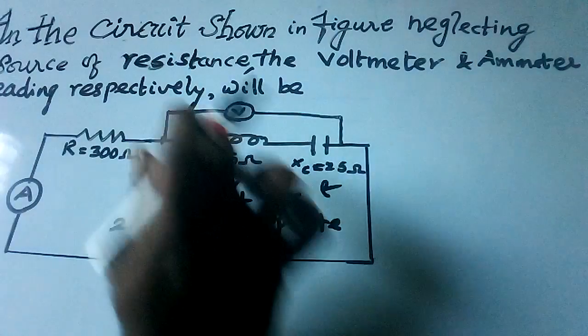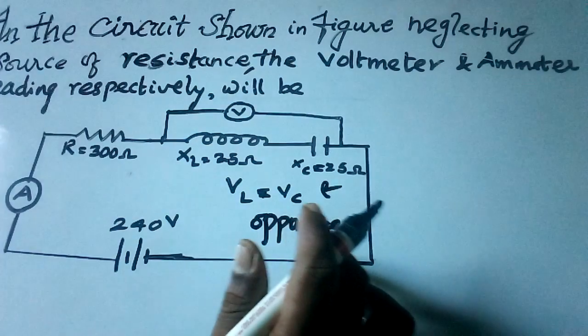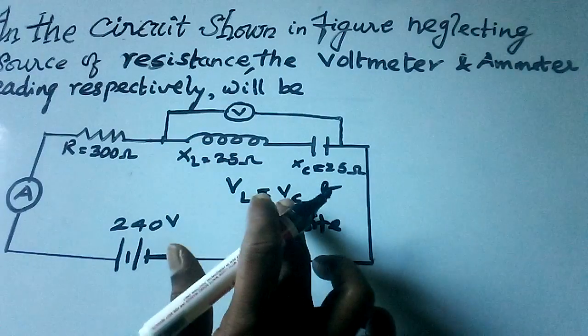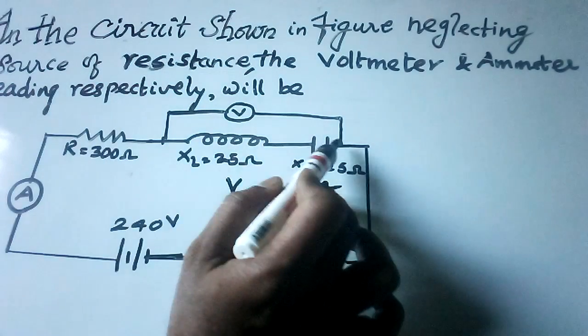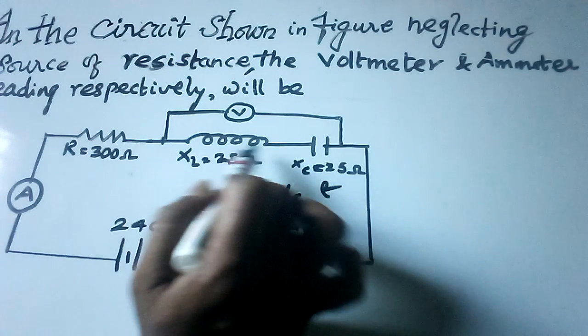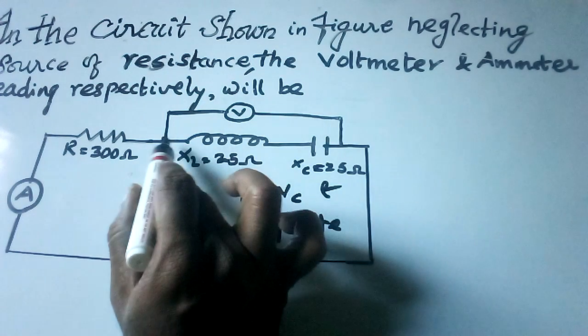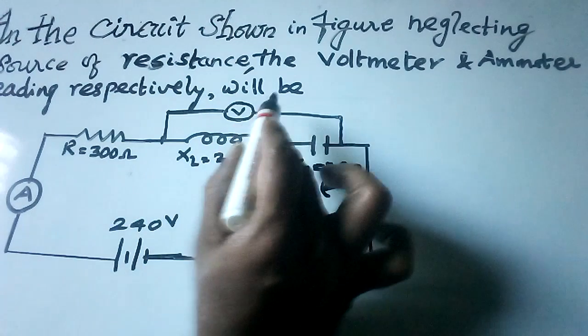The voltmeter reading will be zero, that is VL minus VC equals zero, because it measures the potential difference across these two in series, so the voltmeter reading will be zero.